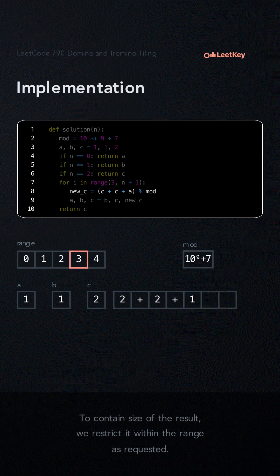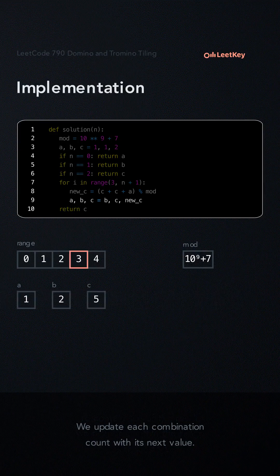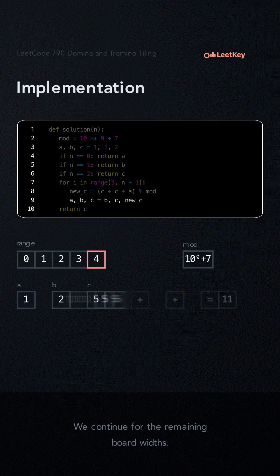To constrain the size of the result, we restrict it within the range as requested. We update each combination count with its next value, and continue this for the remaining board widths.